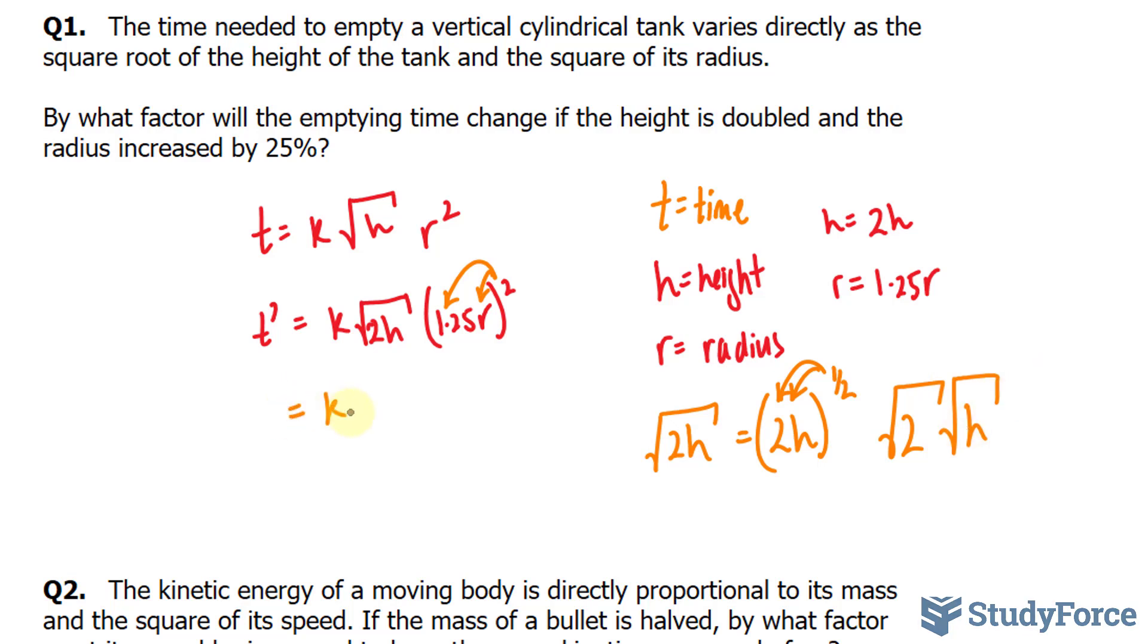Let's go ahead and write that down. We have k times the square root of 2 times the square root of h times 1.25 to the power of 2 r squared. What I'll do next is multiply all the numbers out. So I'll multiply the square root of 2, I know that's a number, and 1.25 to the power of 2 is also a number.